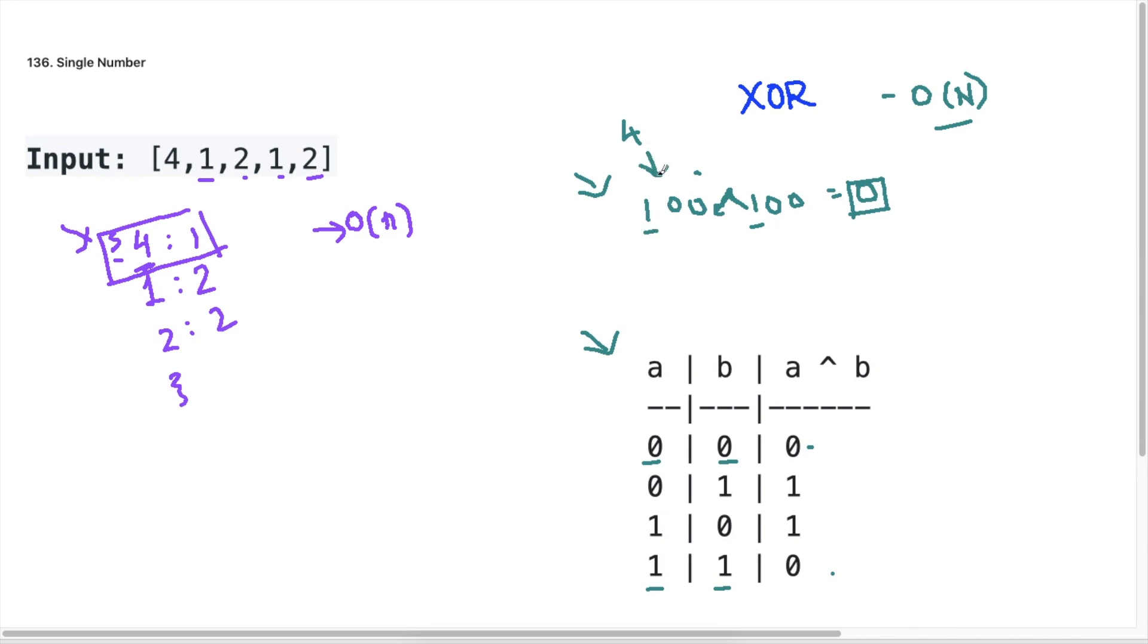So if I convert this to binary and I have 100 and if I do 100 and then I XOR 100, my answer will be 0. And why is that?